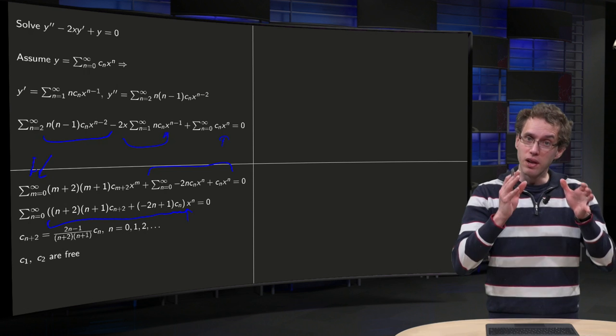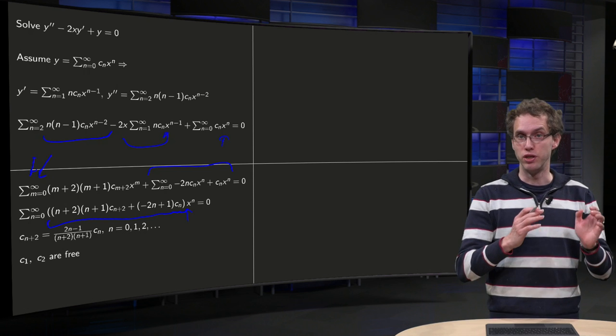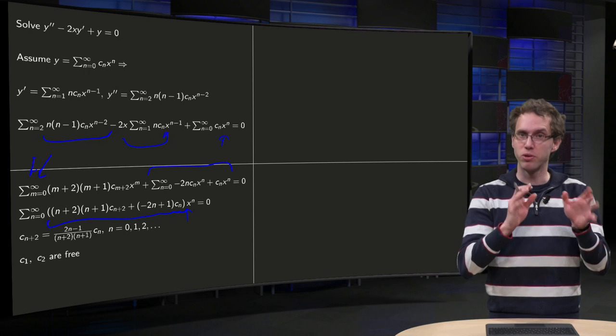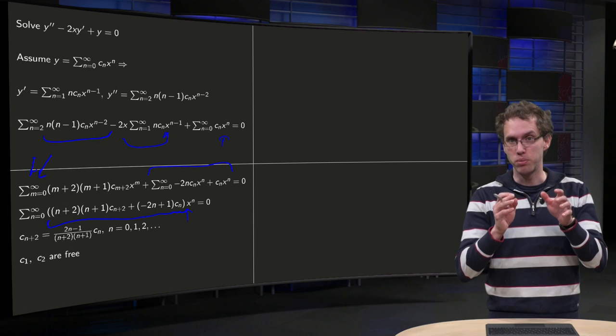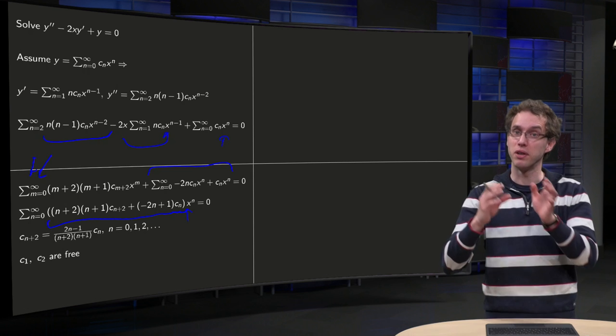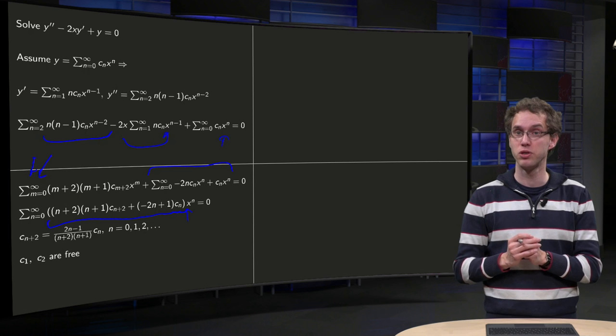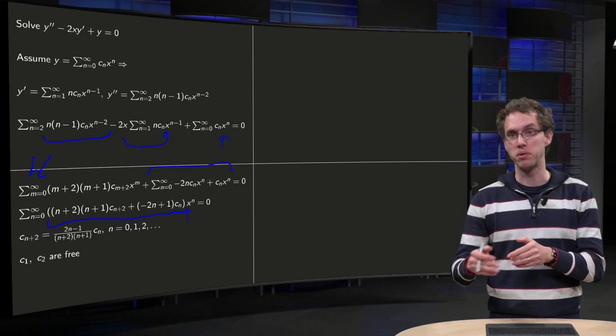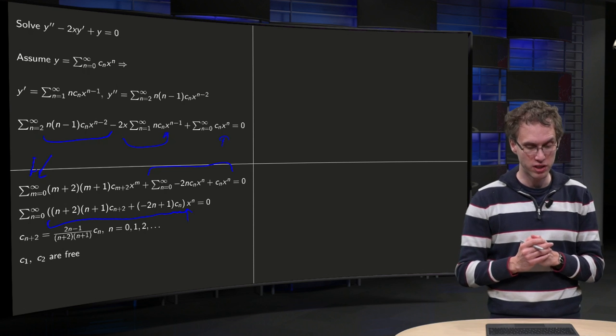So, on the left hand side we have a power series, some constant plus some other constant times x, etc. And on the right hand side we have zeros, so we have 0 + 0x + 0x^2, etc. However,